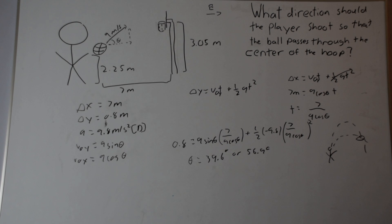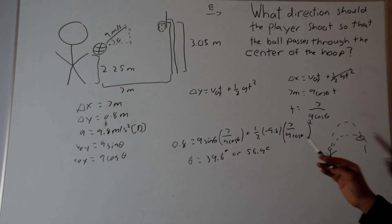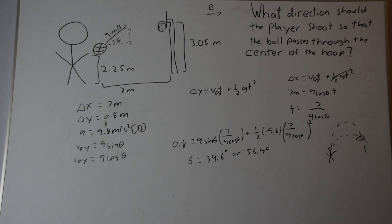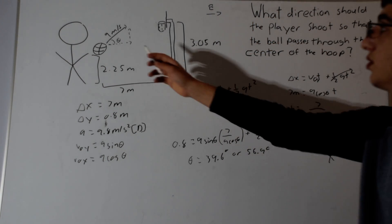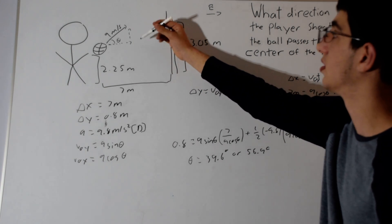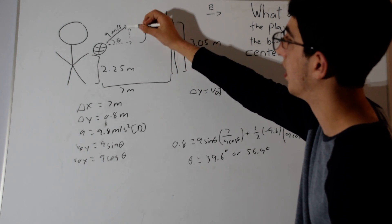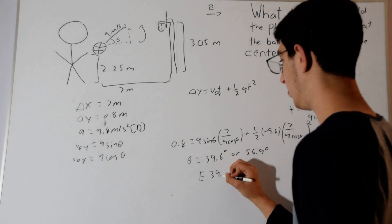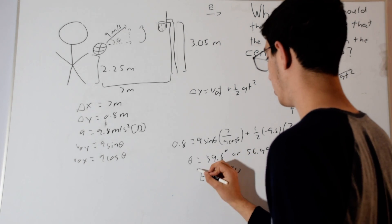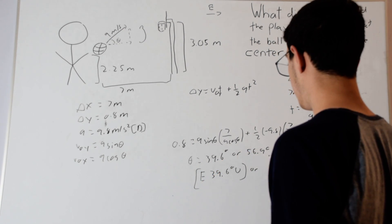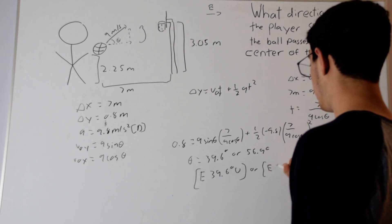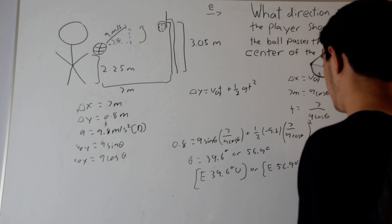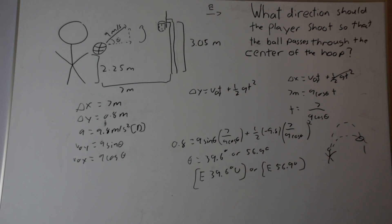We're not quite done yet because the angle alone means nothing without defining its direction. Since east is to the right and the angle is measured from east going upward to the velocity vector, the two valid answers are: East 39.6 degrees up, or East 56.9 degrees up. If the person uses either of these angles to shoot the ball, it will go right into the center of the hoop.